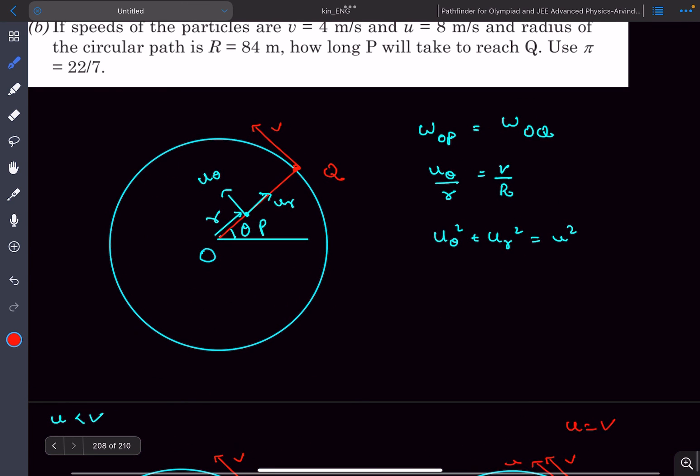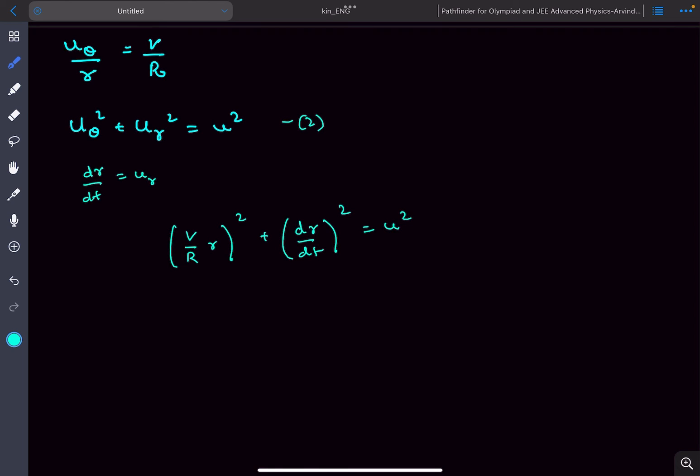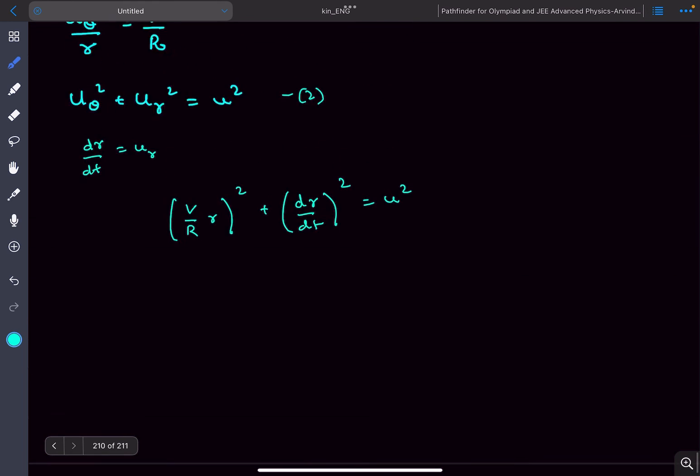Now we can also write one more equation: dr/dt, which is the rate of increase of this distance r, is going to be u_r. Now using these three equations, in equation number two I am going to substitute u_theta from the first equation, so (dr/dt) squared equals u squared. Now we have a differential equation in r, so let's solve it.